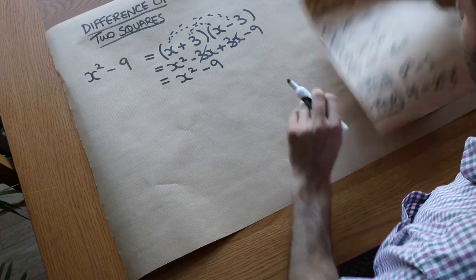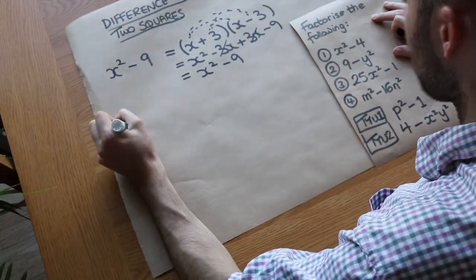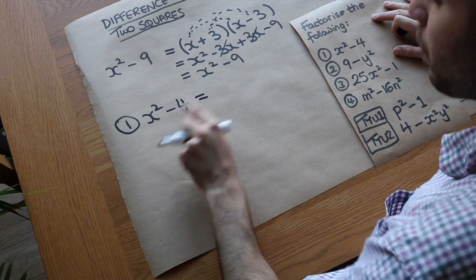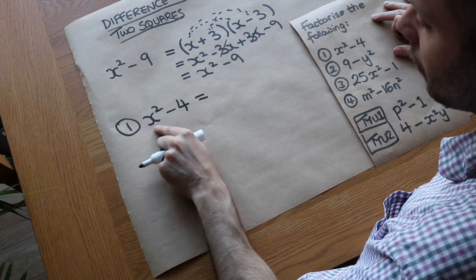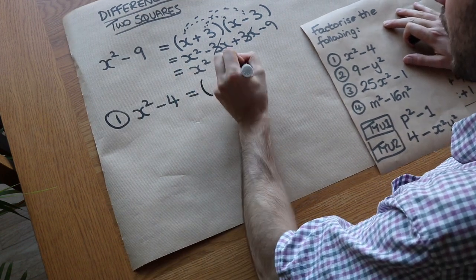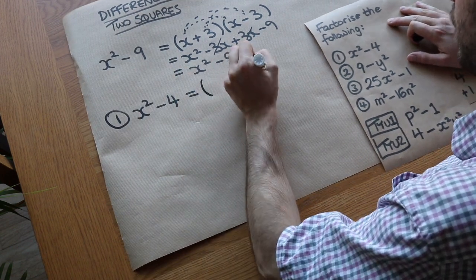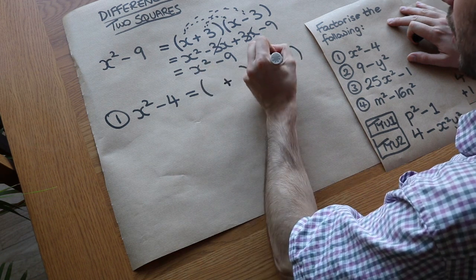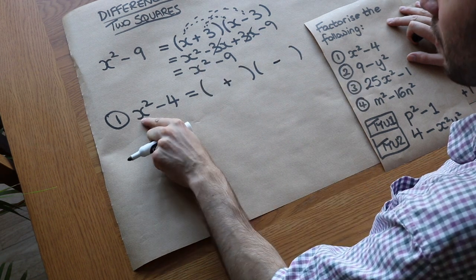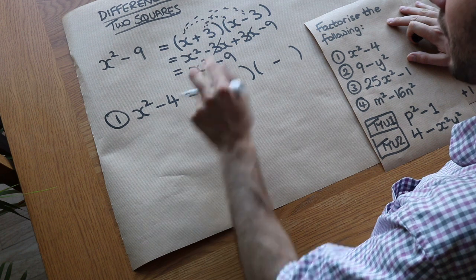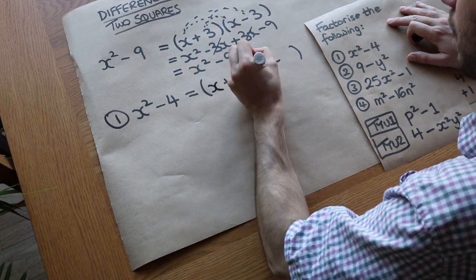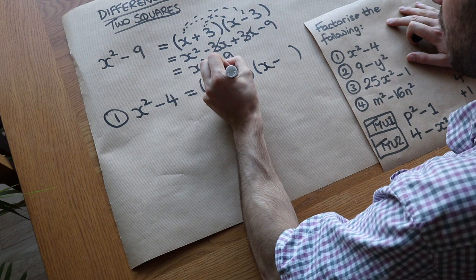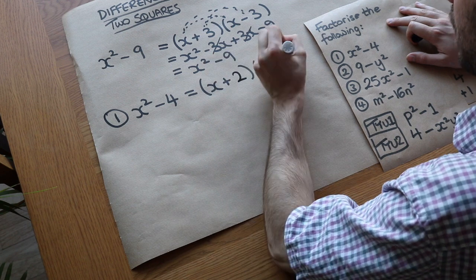Now for some examples. We've got x squared minus 4. Same as before — we have a difference of two squared things. We do two brackets, put a plus in one and a minus in the other. The square root of x squared is x, so x is the first term. The square root of 4 is 2, so we put 2 as the second term.